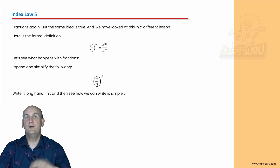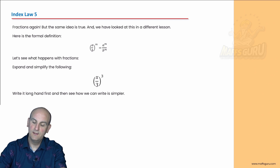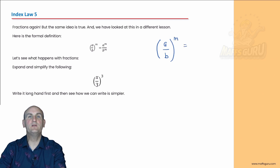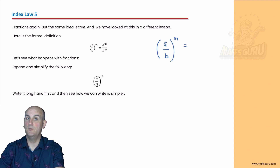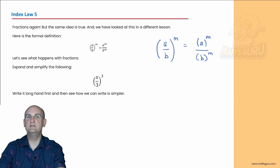So leaving that to one side for the moment, we're now going to deal with Index Law 5, which is the last one and involves fractions. Believe it or not, it is exactly the same rule. We've got (a/b) all to the power of m. With fractions, we can take each of those individual terms and raise them to the power of m. So we write that as a to the power of m divided by b to the power of m.